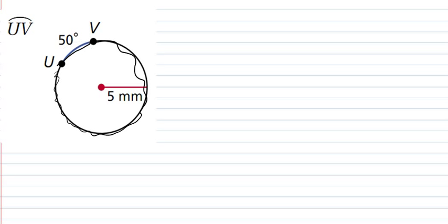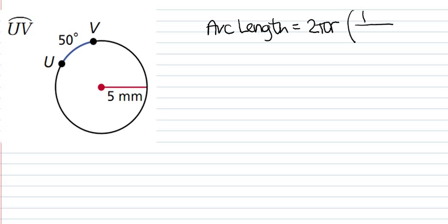So, I'm going to write our formula down that we've been using. Arc length is the circumference, 2πr, and then remember, we have to multiply by that fraction, which is the number of degrees over 360, because it's a total of 360.